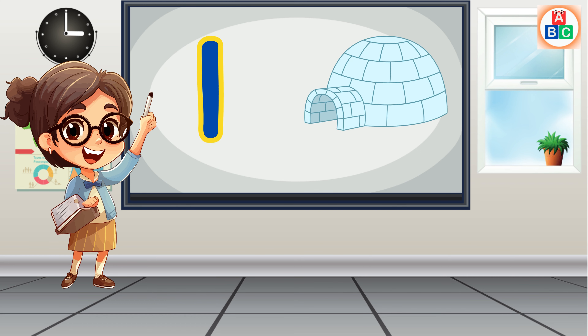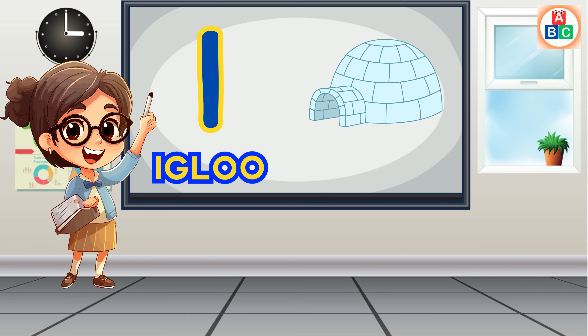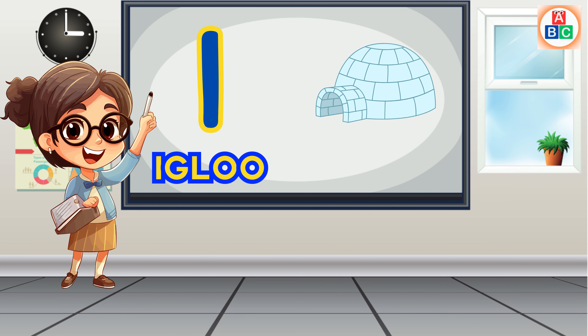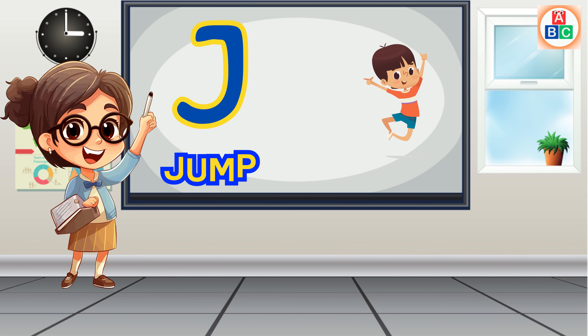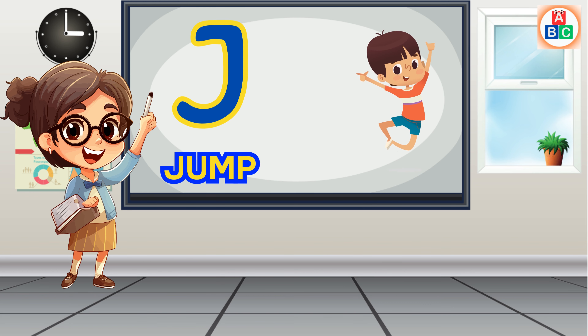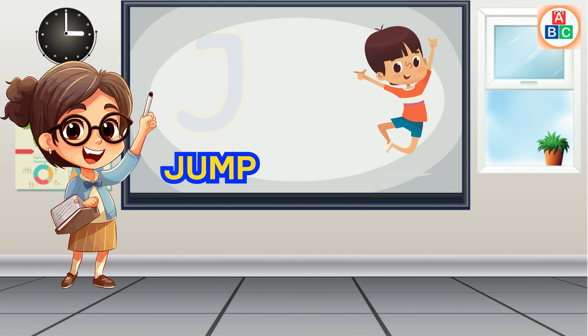I is for igloo, i-i-igloo. J is for jump, j-j-jump.